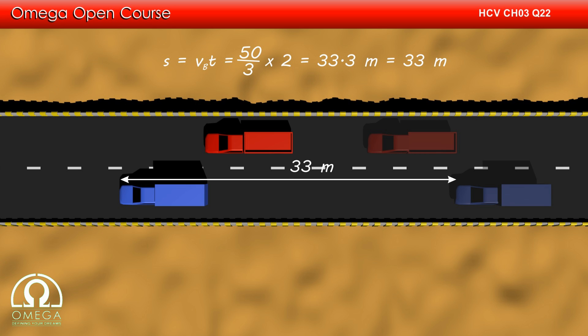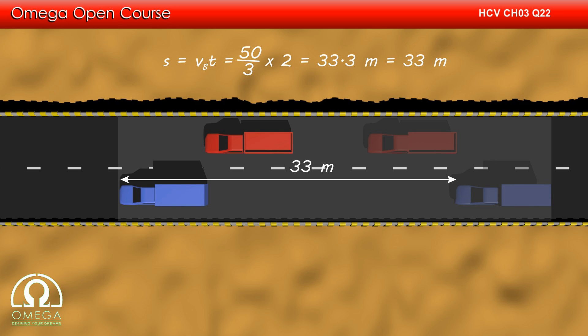But as you can see, the total road length used for the overtake is more than the distance travelled by the blue car by an amount equal to the length of the car. Hence, the total distance of road used during the overtake is 38 meters. This is the answer to the second part of the question.